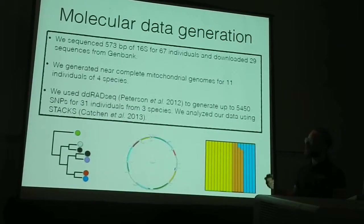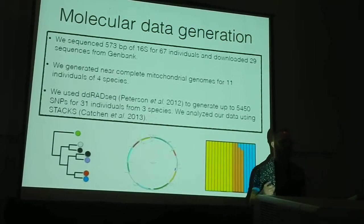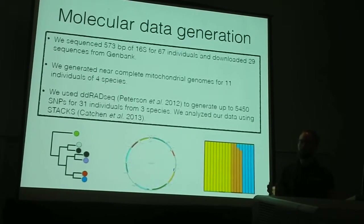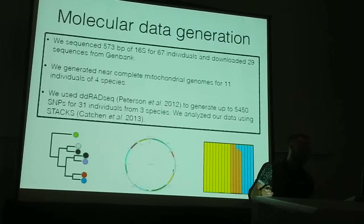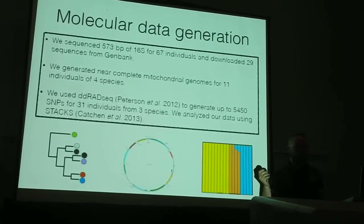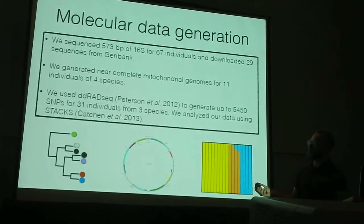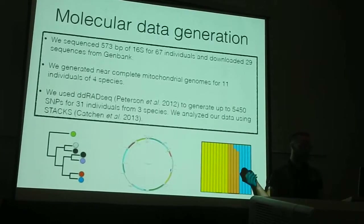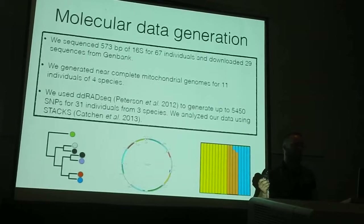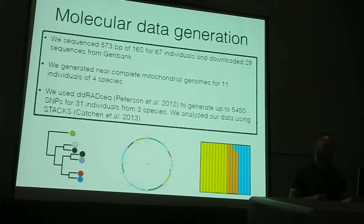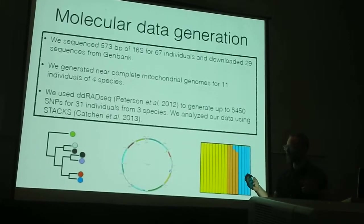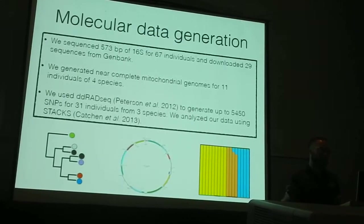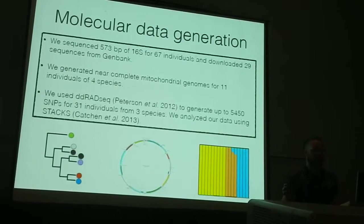I generated three molecular datasets to address these questions. The first is a 16S dataset with all the recoveries available on GenBank and population sampling for my focal taxa as well as everything from Sumatra. I generated almost complete mitochondrial genomes for four species from Sumatra including the three focal taxa, and then I used RAD-seq to generate a nuclear dataset for 31 individuals including those three focal taxa — I'll present the most widespread one today.